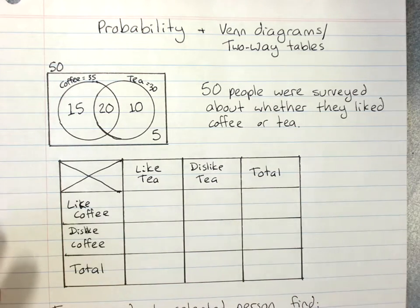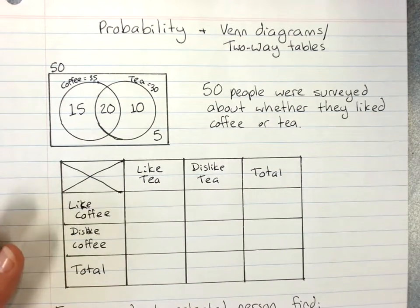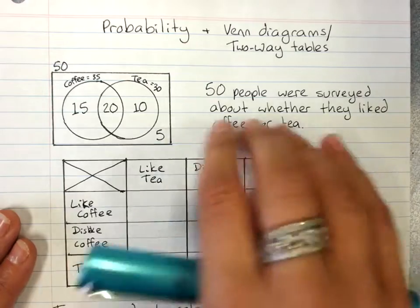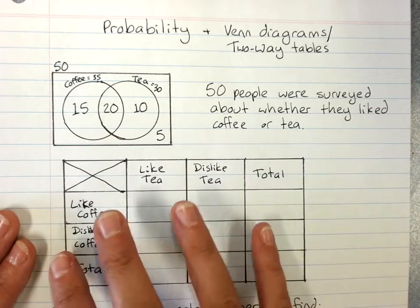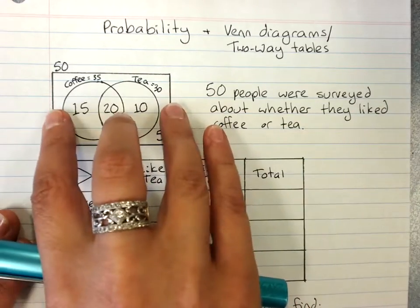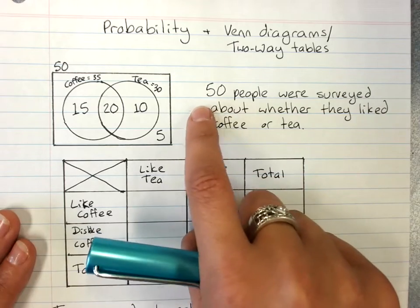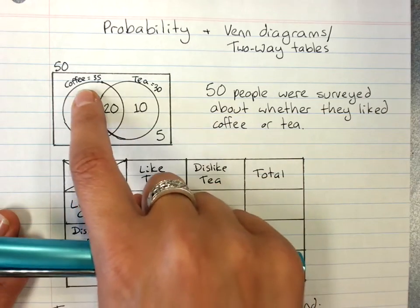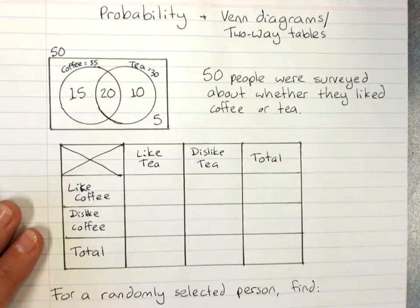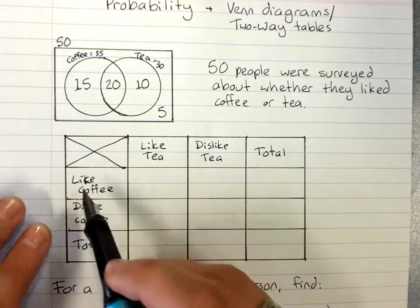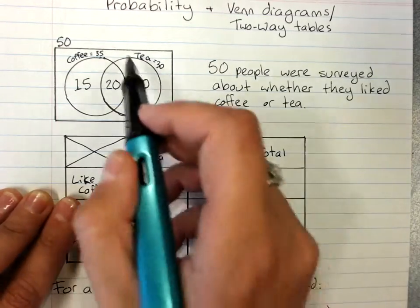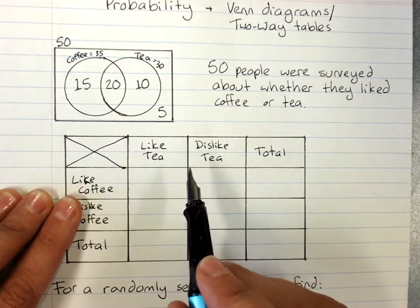Probability and two-way tables and Venn diagrams. Now we're already pretty good at drawing Venn diagrams and two-way tables. I've got a Venn diagram here based on 50 people being surveyed about whether they liked coffee or tea. And we can fill in the two-way table because sometimes the two-way table is easier than the Venn diagram for probability.